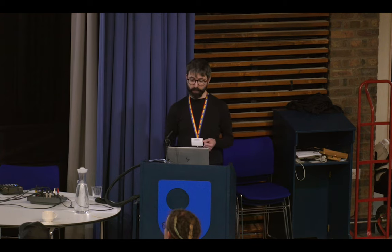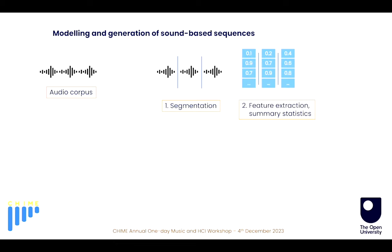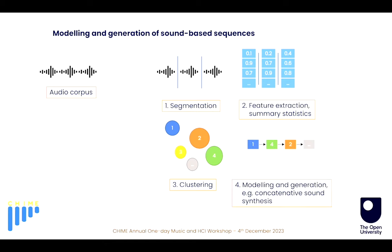To generate copies or variations of music and sound played by musicians, we need to model sequences of those sounds. How has this been implemented in the literature so far? We start with an audio corpus, find the main elements by segmenting it, then there is feature extraction and computation of summary statistics of these features. Once we have this information, we can cluster these segments into classes and model the sequences of these segments — and therefore generate sequences that are, to an extent, similar to the corpus. One technique we can use, for example, is concatenative sound synthesis.